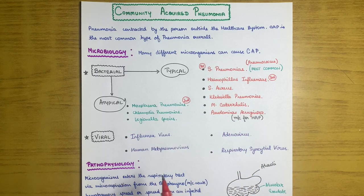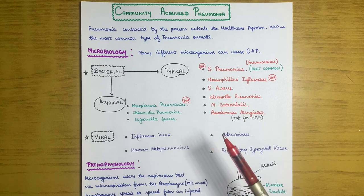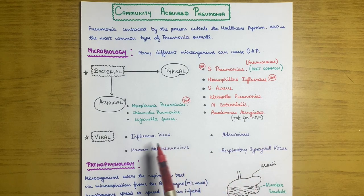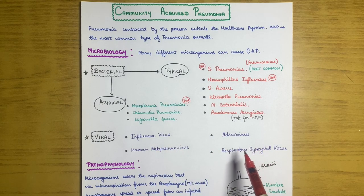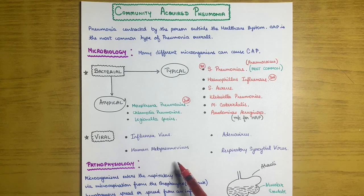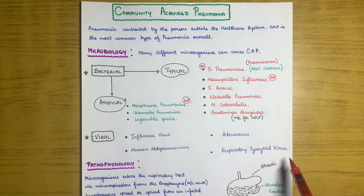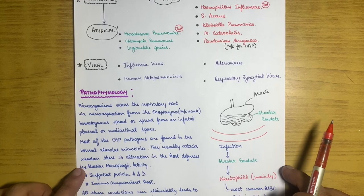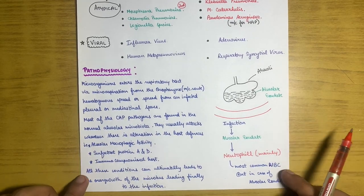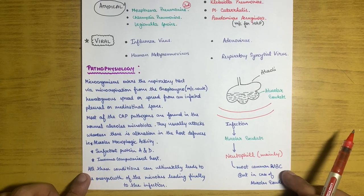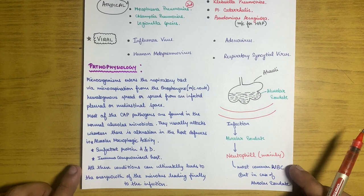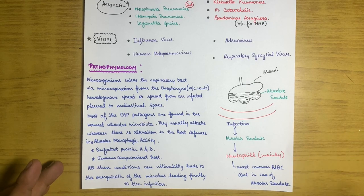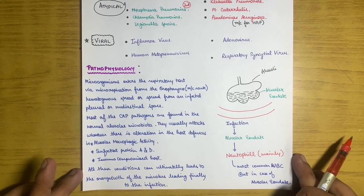Now the viral causes. Viruses that can cause community acquired pneumonia include influenza virus, adenovirus, human metapneumovirus, and respiratory syncytial virus (RSV). These are the main causative organisms — bacteria and viruses — that lead to community acquired pneumonia.